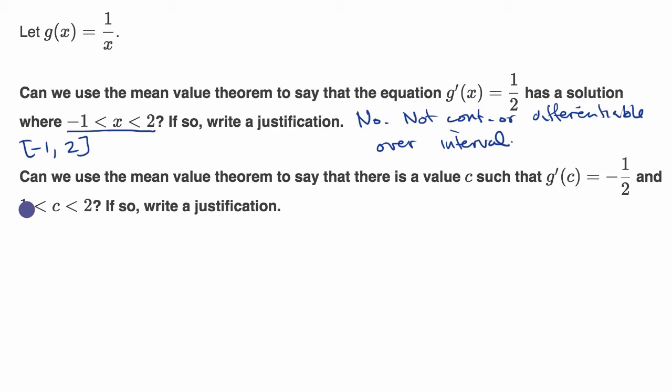In this situation, between one and two on both the open and closed intervals, this is a rational function and a rational function is continuous and differentiable at every point in its domain. Its domain completely contains this open and closed interval. Or another way to think about it, every point on this interval is in the domain.